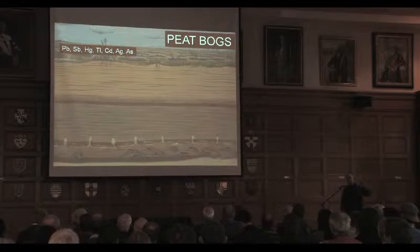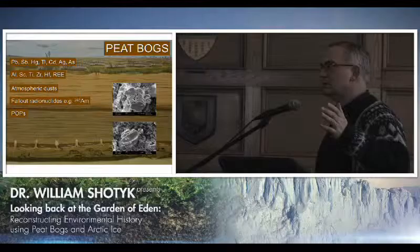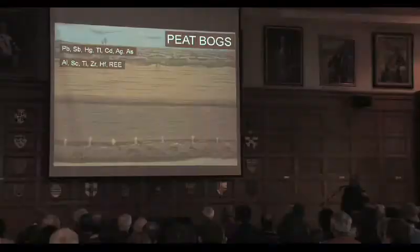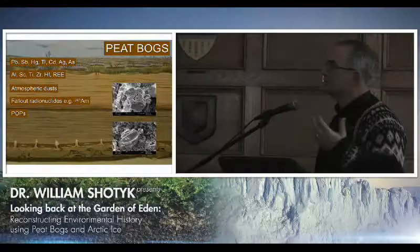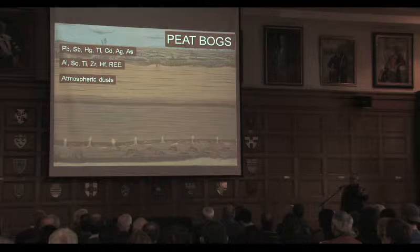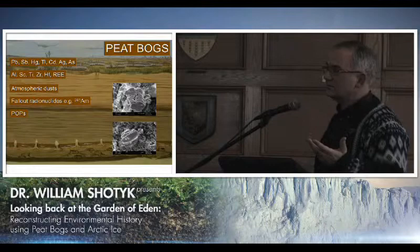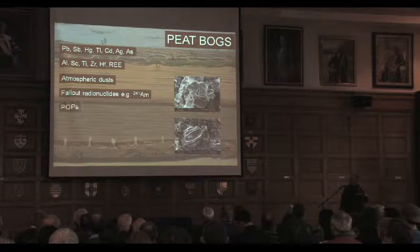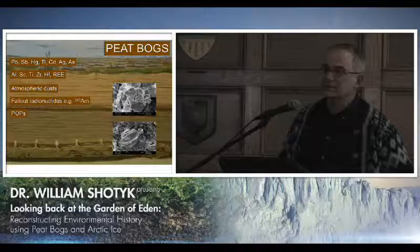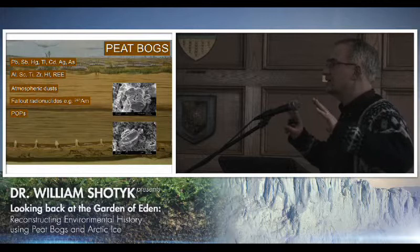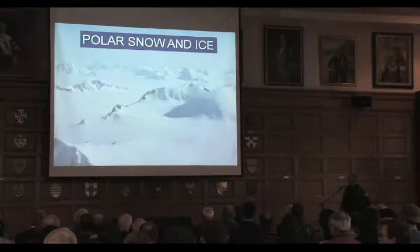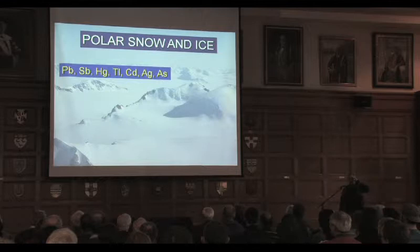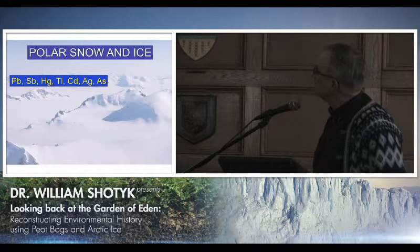Peat bogs are also excellent archives of a broad range of potentially toxic metals and lithogenic metals that are important indicators of soil dust deposition and climate change. We can reconstruct changing rates and sources of atmospheric dust — whether soil-derived dust particles or volcanic ash — as well as fallout radionuclides and even persistent organic pollutants. Ice cores, as I said, are our supreme archives of atmospheric change. We've been looking at trace metals in ice cores to compare with our peat bogs.